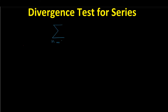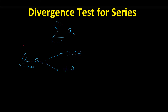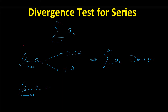Consider a general series in the form of sigma n from 1 to infinity of a sub n. If we take the limit of a sub n as n goes to infinity, and this limit does not exist or does not equal 0, then we can say that the given series diverges. But note that if the limit of a sub n as n goes to infinity does equal 0, we cannot say anything about convergence or divergence of the series.